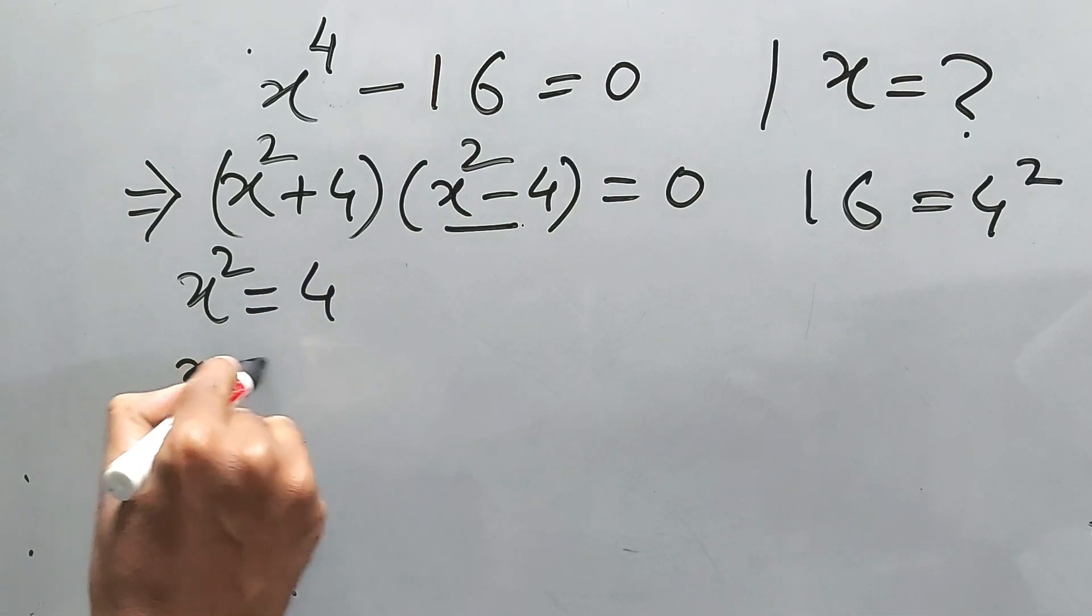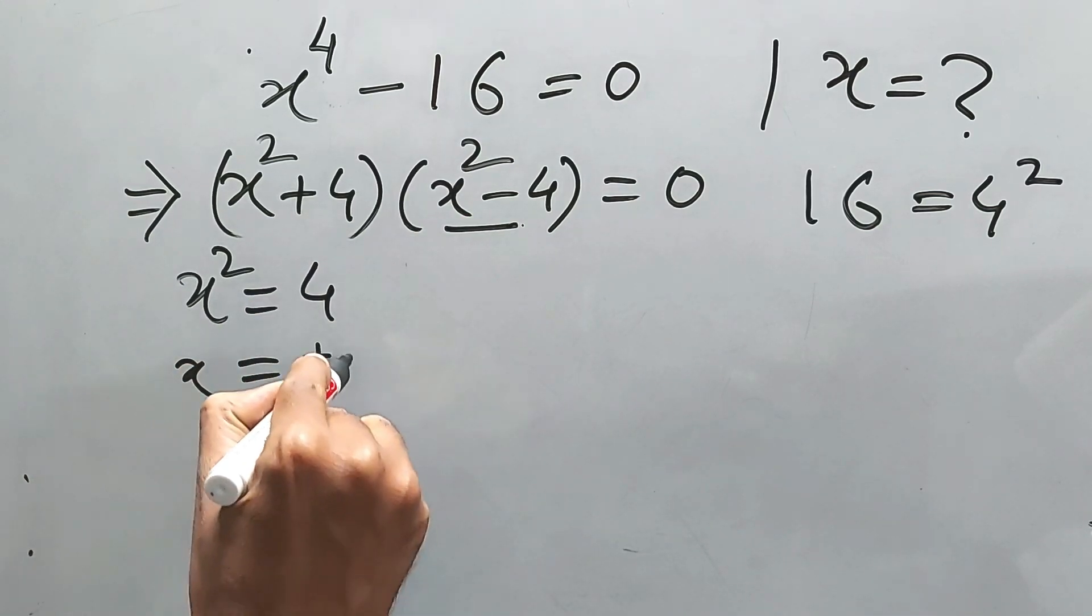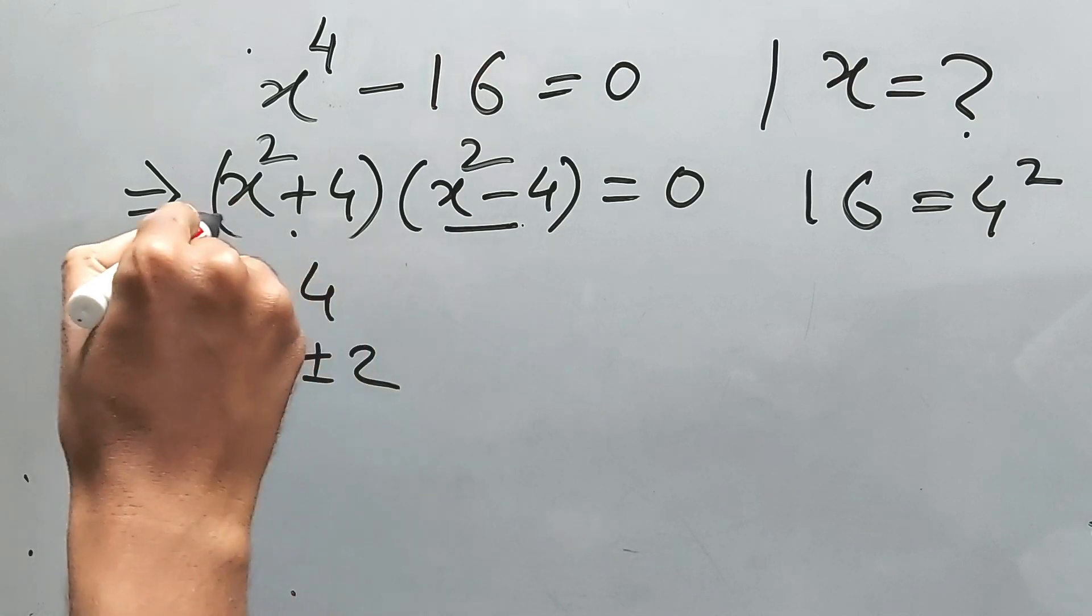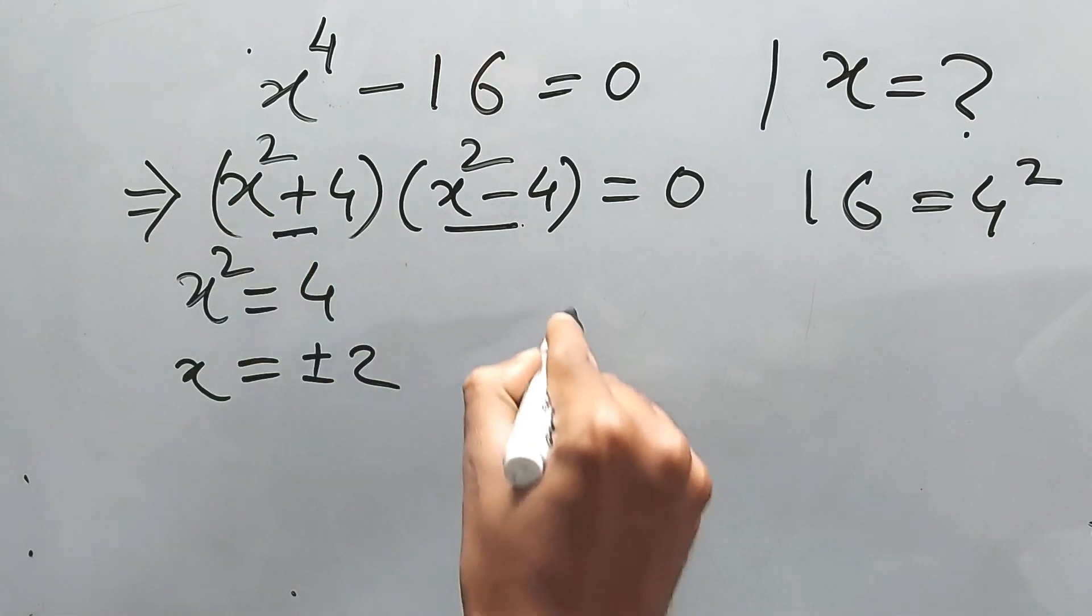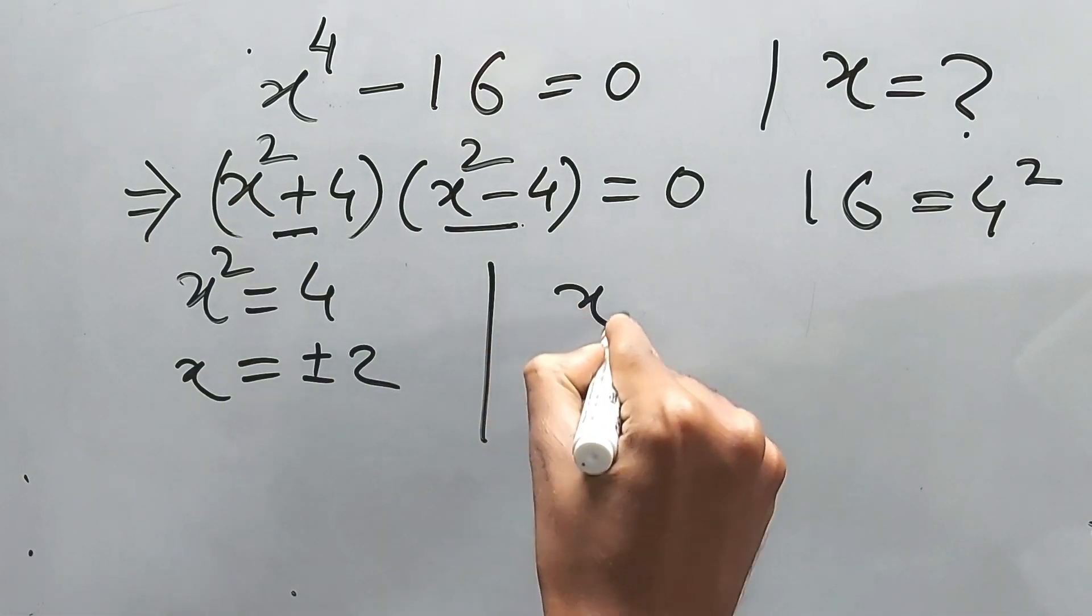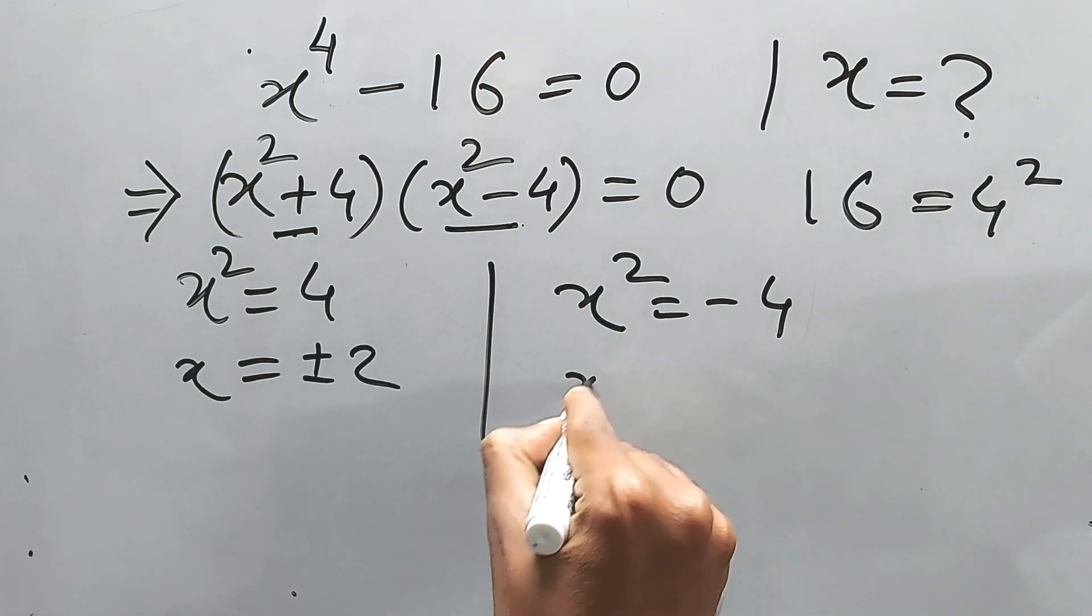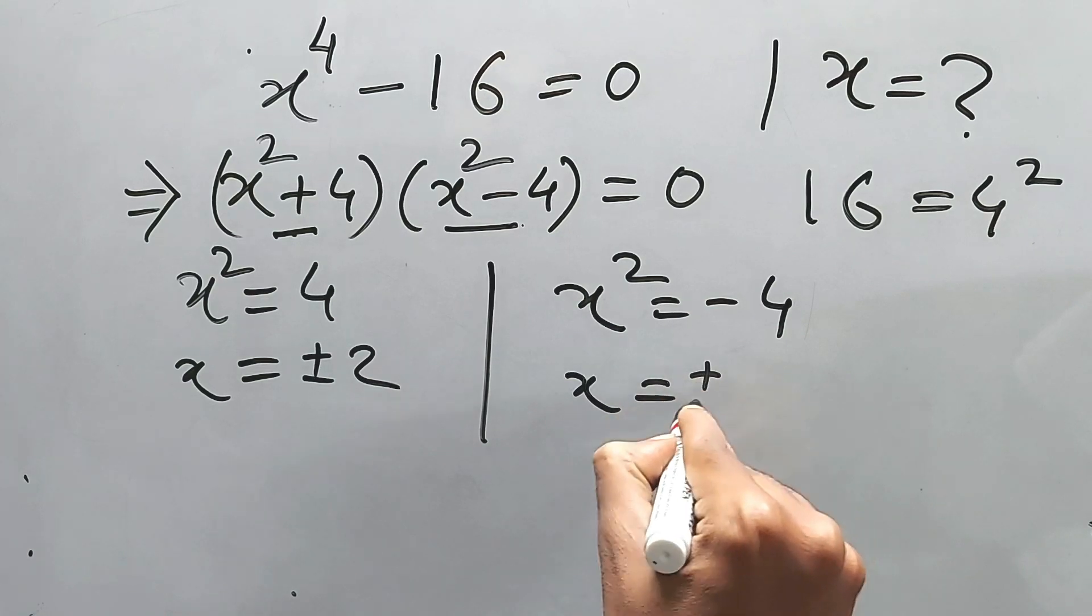x is equal to plus minus 2, right? And whenever x squared is equal to minus 4 from this one, x is equal to plus minus.